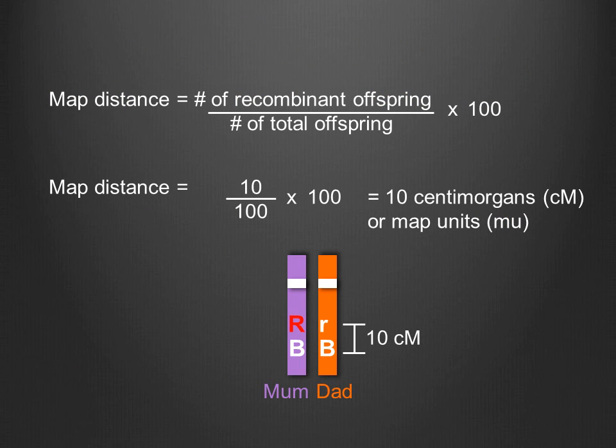Of a total of 100 offspring, 10 are recombinants. Therefore, the recombination frequency between these genes is 10 percent, or when expressed in map distance units, 10 centimorgans.